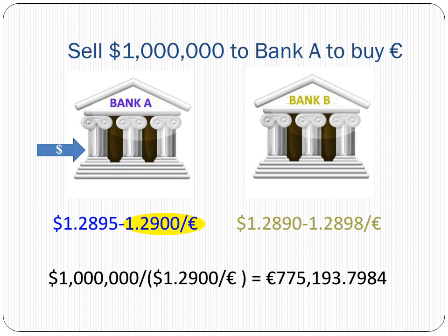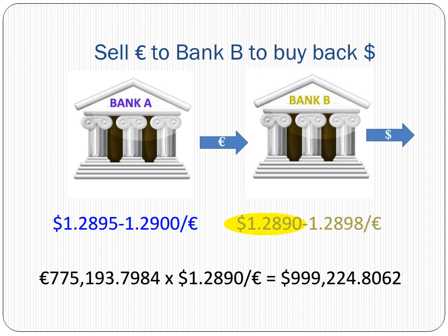Now let's look at calculations. When we sell one million dollars to Bank A, the bank is selling euros to us at the ask price, so we receive 775,193.80 euros. When we sell this euro amount to Bank B, the bank is buying euros at the bid rate and we receive 999,224.81 dollars. Since we wind up with fewer than one million dollars, this strategy is not profitable.